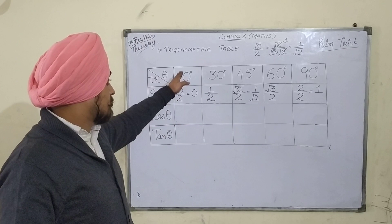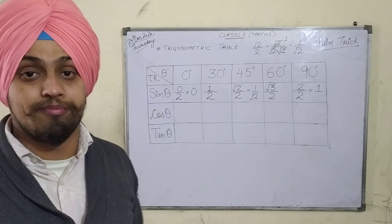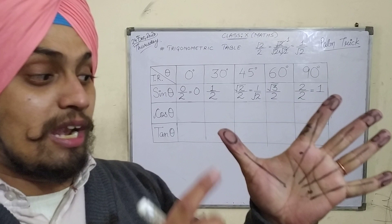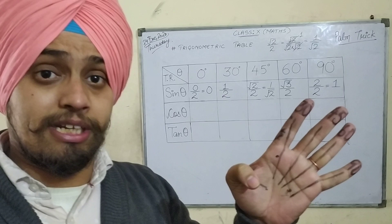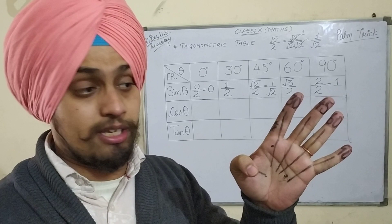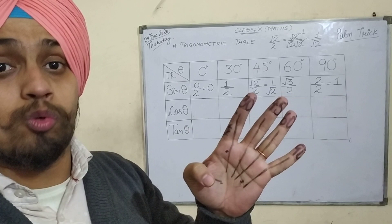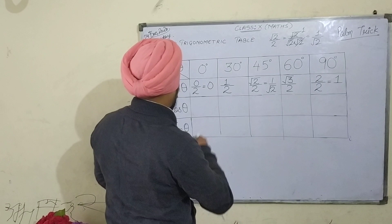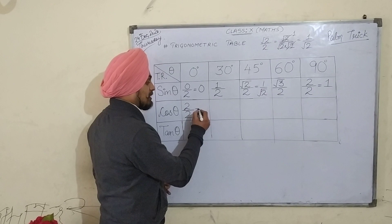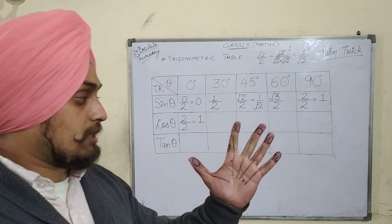Now let's calculate the value of cos theta for 0 degree, 30 degree, 45 degree, 60 degree, and 90 degree. Let's start with cos 0 degree. Again I will bend the finger on which 0 is written. This time for cos theta I will not see to the left of it, but rather I will see to the right of it — how many fingers are there. There are 4 fingers to the right of it. I will take the square root of 4, which is 2, and divide it by 2. So 2 by 2 equals 1, which is the value of cos 0 degree.